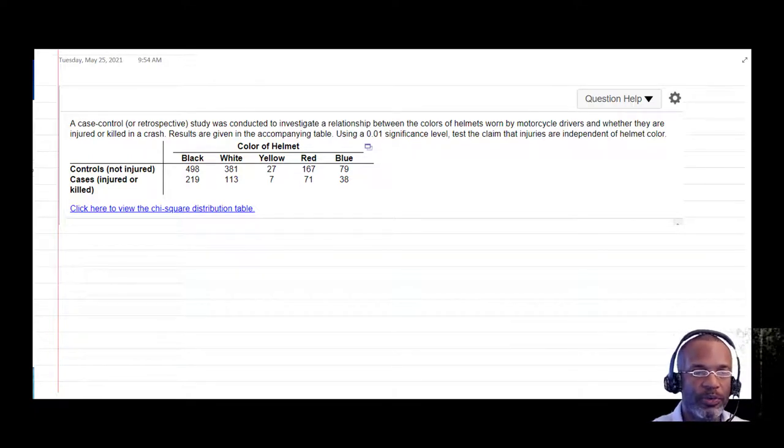So this particular problem looks at data that involved a study that investigated whether or not the color of helmet one wore had any relationship to whether or not the injury one suffered in a motorcycle accident was severe or not. So is there any contingency or relationship between the color of helmet worn and whether or not the injury was severe?